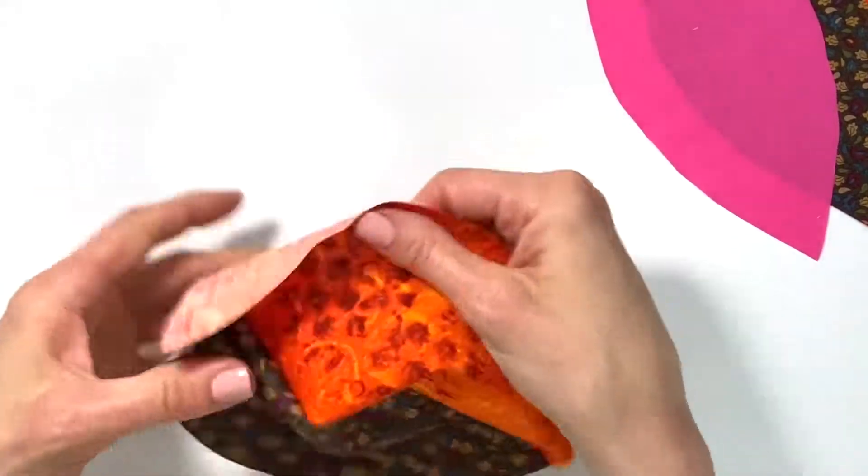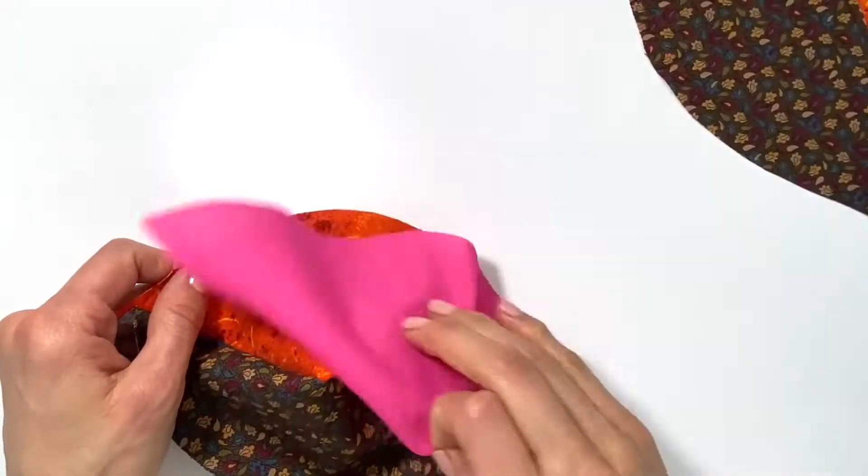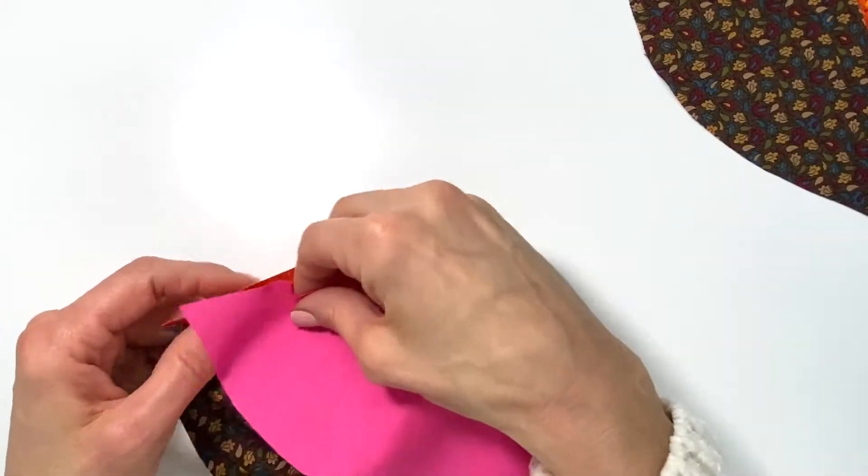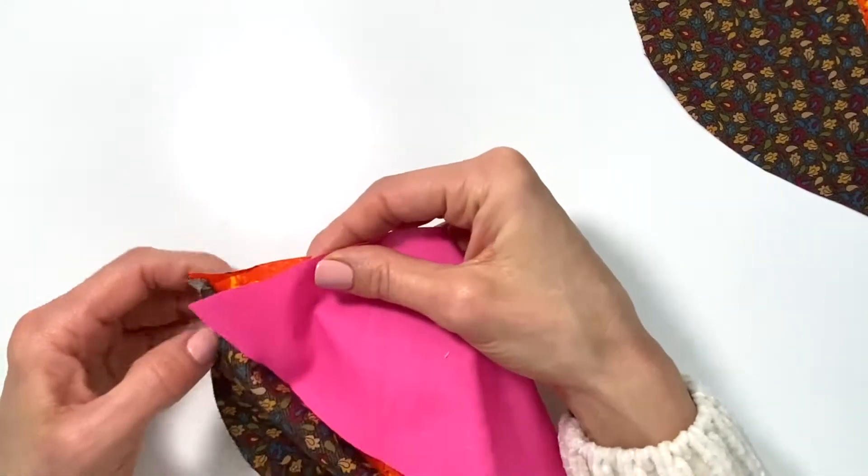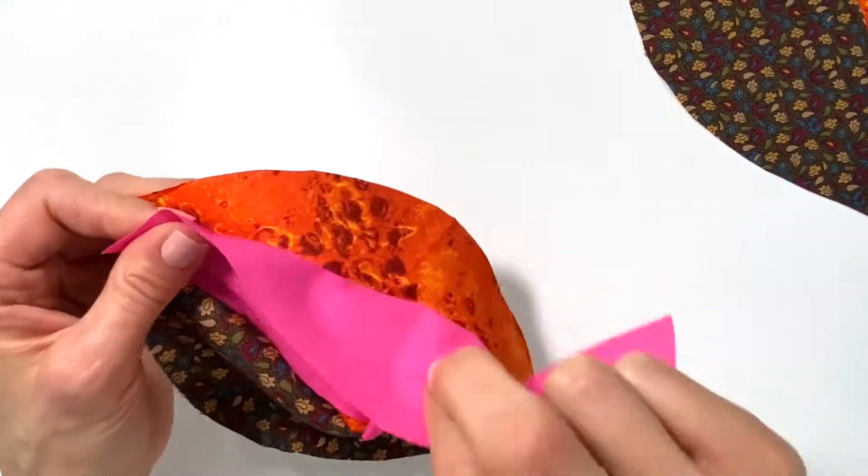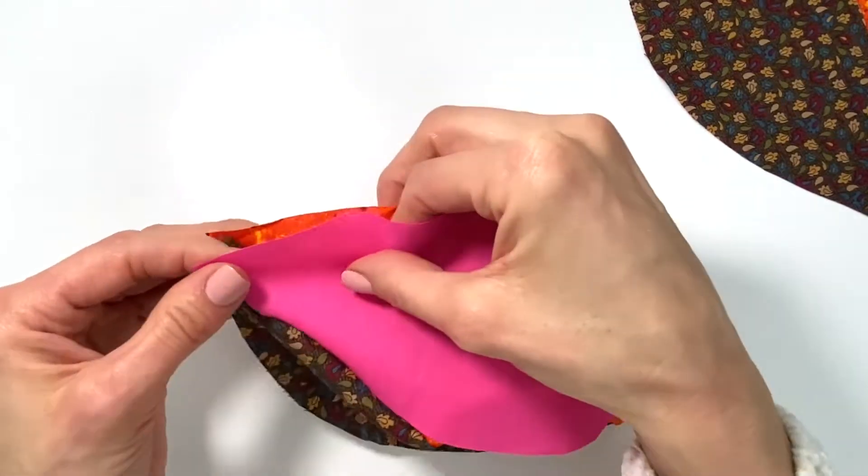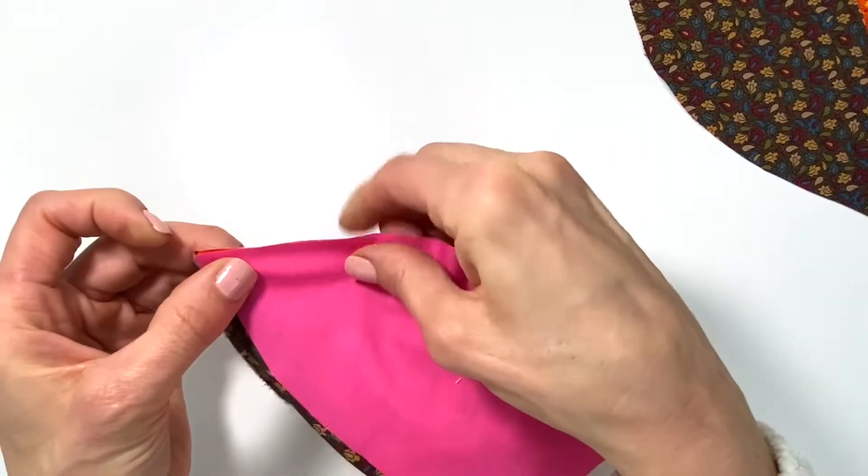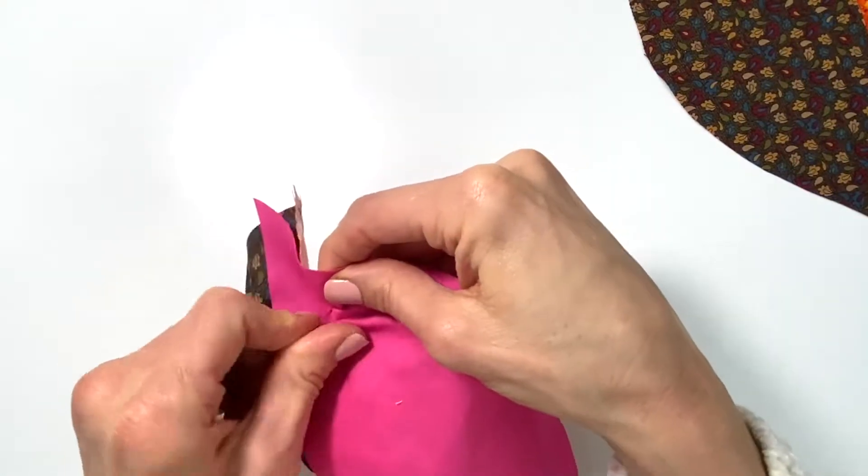What you're going to do is you're going to open it up, and then you're going to take your next piece and continue the process. So right sides together, and again this is the plain cotton so there really is no wrong or right side, and I'm going to pin it in place.